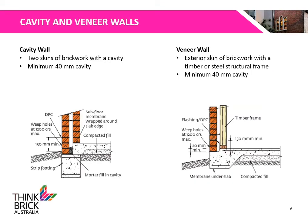Here are two diagrams detailing both cavity and veneer walls. Cavity walls include two skins of brickwork. Veneer walls include an exterior skin of brickwork with a timber or steel structural frame. Both walling systems require a minimum cavity of 40mm to meet waterproofing requirements.